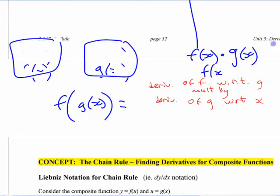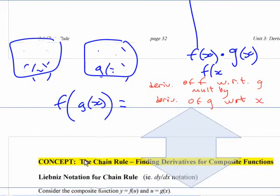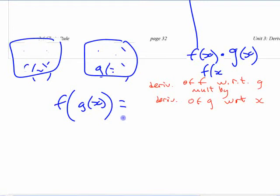If you want to write that out with symbols, then this notation always seems more complicated here. This is f prime g of x. I'm leaving g of x inside there because that's the variable when you look at the outer function. Times g prime of x.